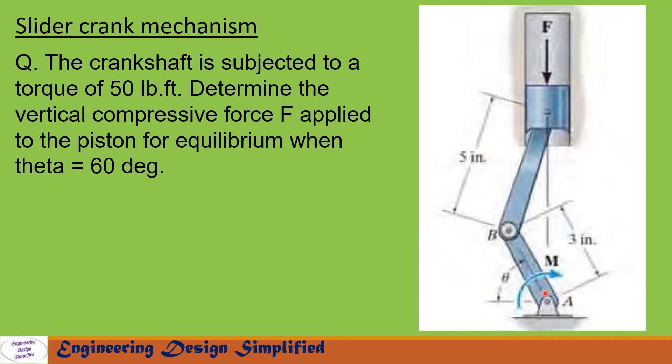This link AB is the crank and this link is the coupler. The length of the crank is 3 inches, coupler length is 5 inches. There is a torque M equal to 50 lb·ft applied on this crank. For theta equal to 60 degrees, we need to find the amount of F force in the piston required to keep this mechanism in equilibrium. Let us see in the coming slides how to solve this problem.